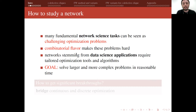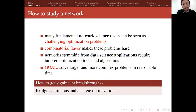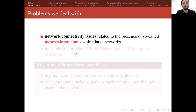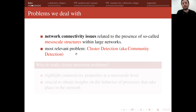Our main goal is solving larger and more complex problems in reasonable time. A possible way to make significant breakthroughs is by bridging continuous and discrete optimization — something researchers have been trying to do for at least a couple of decades. The focus is on network connectivity issues related to the presence of mesoscale structure in large networks, and the most relevant problem is the so-called cluster detection problem, also known as the community detection problem.